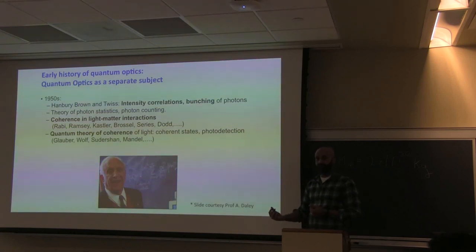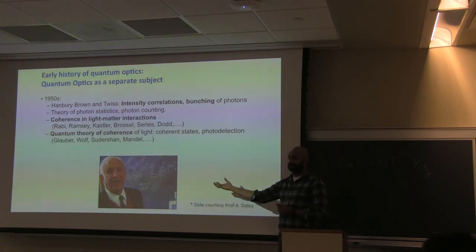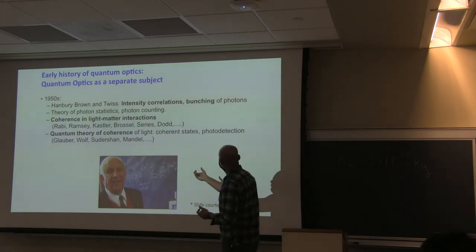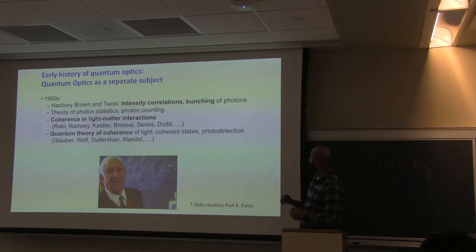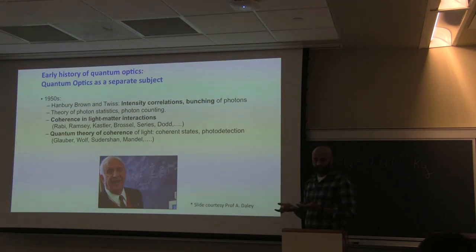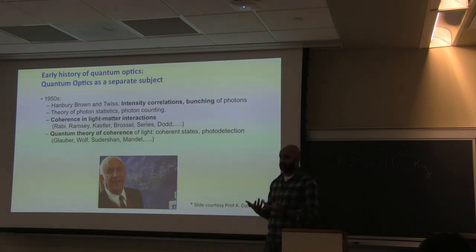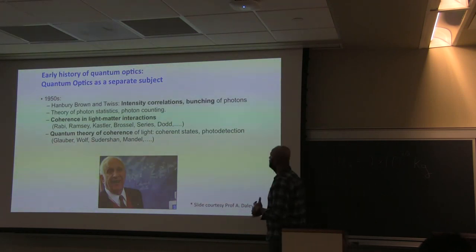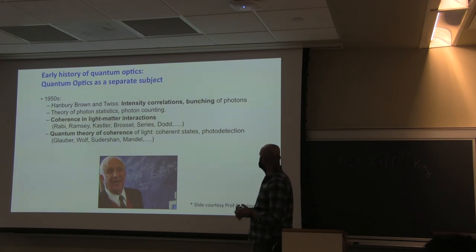In the 1950s, some experiments first started to make people think about what quantum optics really is. This involves understanding the theory of photodetection — it seems like a simple thing: you send photons into a detector, it produces an electrical signal proportional to the intensity. But when you look deeper into the problem, it turned out to be quite subtle. It took almost until the 1950s that we finally came up with a fully quantum theory of photodetection and of the coherence of the electromagnetic field.